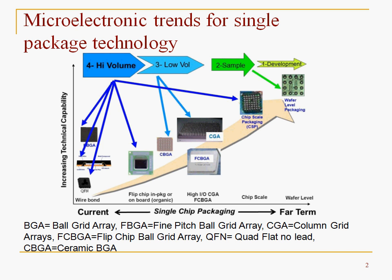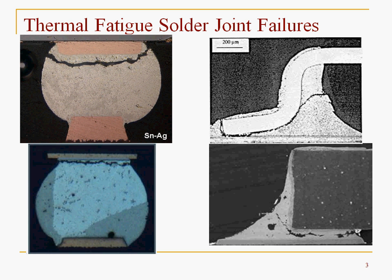Microelectronics trends have certainly gotten more complex over the years, and we have a lot of challenges in understanding solder joint reliability. Thermal mismatches between your package and your circuit board cause stress on your joints, leading to a number of different failures. Here's a view of some BGA cracks and gull-wing type cracks, which can be quite challenging.